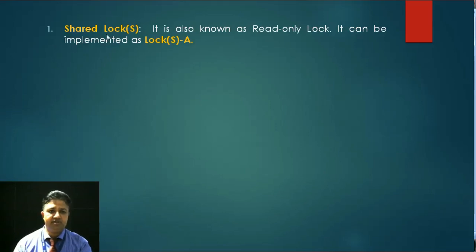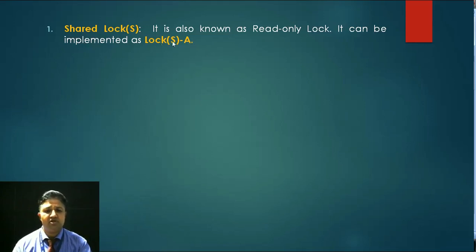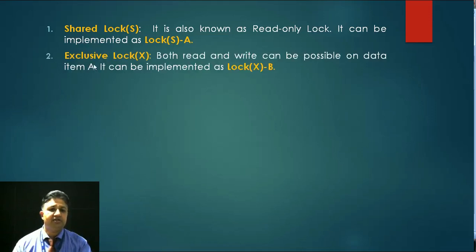Shared lock is also known as read-only lock. It means that whenever we have any data item A and we are implementing a read-only lock on it, we can only read that data item A — we cannot implement any other operations like write or update on data item A. It can be implemented as lock-S(A), meaning A is a data item on which the lock is implemented in shared mode, so data item A can only be read.